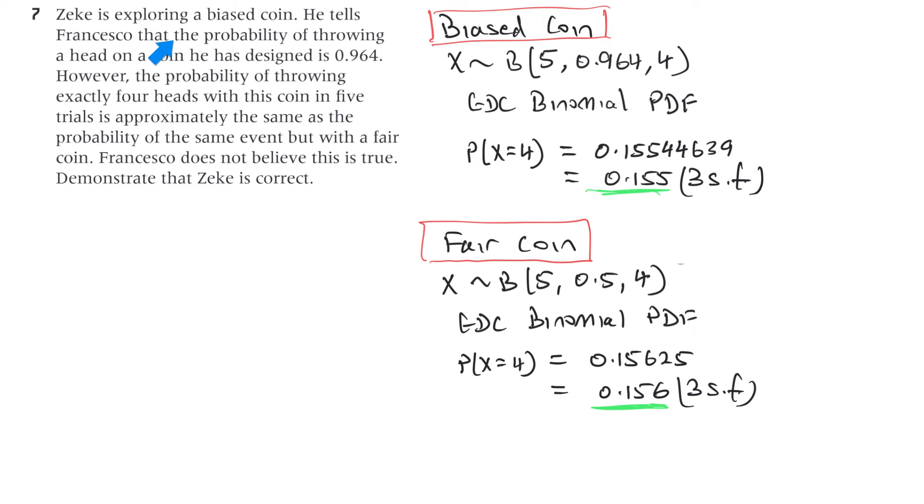Question seven. Zeke is exploring a biased coin. He tells Francesco that the probability of throwing a head on a coin he has designed is 0.964. However, the probability of throwing exactly four heads with this coin in five trials is approximately the same as the probability of the same event but with a fair coin. Francesco does not believe this is true. Demonstrate that Zeke is correct. With the biased coin, that's the one that Zeke is exploring, X is distributed binomially. He says the probability of throwing exactly four heads with this coin in five trials. So it's five trials. His biased coin has that probability of getting a head. And the probability of getting exactly four heads, so we use GDC binomial PDF. We enter that into the calculator and you get 0.15544639, which is 0.155 to three significant figures.